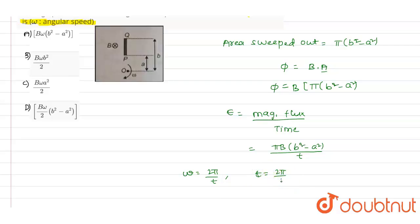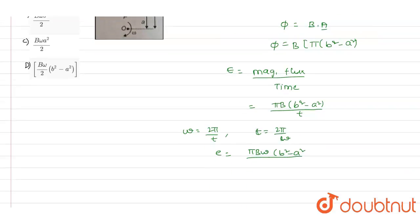We can write the induced emf value as E equals pi into B omega into b squared minus a squared divided by two pi. So the induced emf capital E will be equals to B omega b squared minus a squared divided by 2.